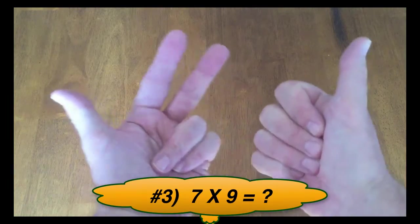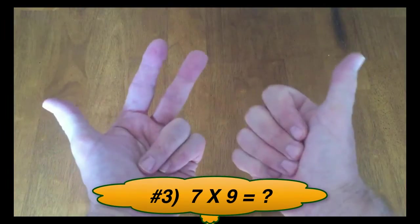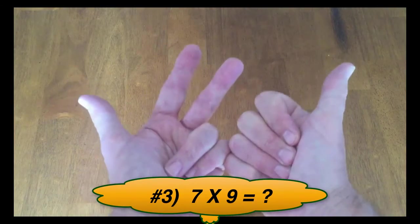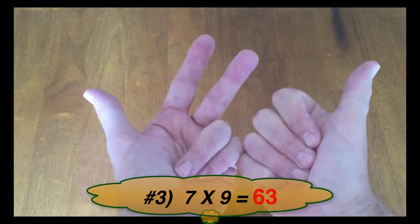We look at our up fingers, we've got 3 on our left hand, 1 on our right hand. 3 times 1 is 3. 60 plus 3, 63. 7 times 9 is 63.